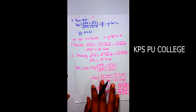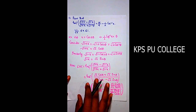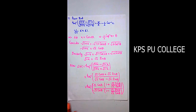Question 11: Prove that tan⁻¹[(√(1+x) - √(1-x)) / (√(1+x) + √(1-x))] = π/4 - ½cos⁻¹(x), where x is in [-1/√2, 1]. This is very important. Let x = cos(2θ).